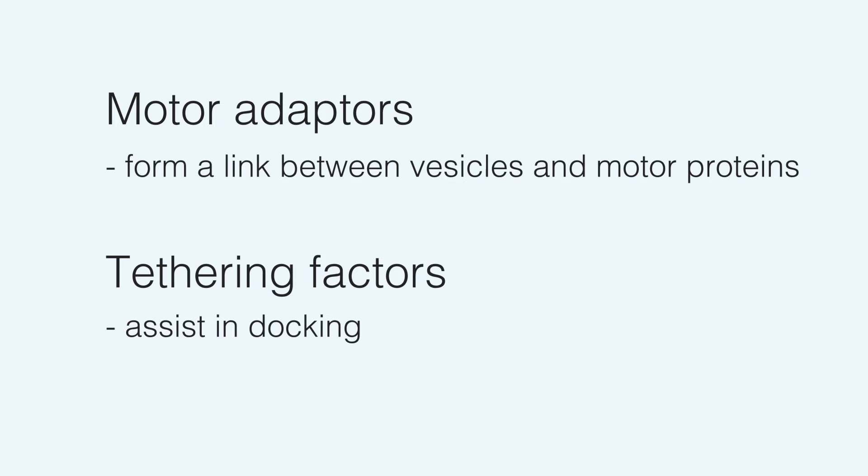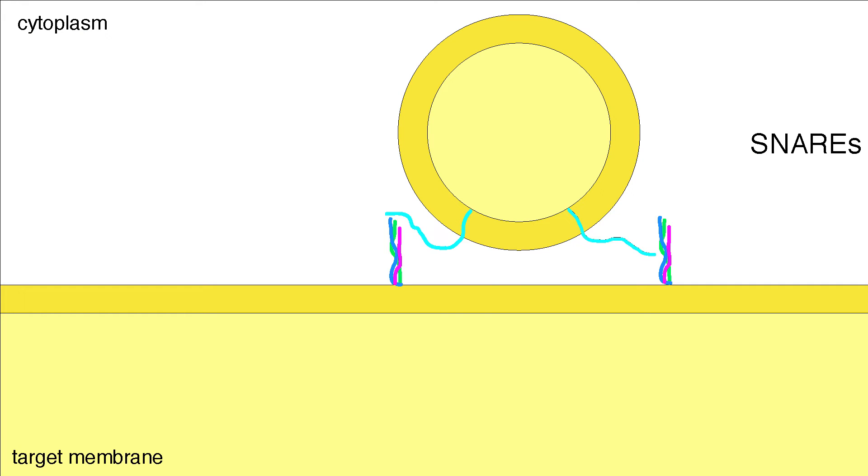But bringing the vesicle to the correct target membrane is only half the battle. The real challenge is overcoming the energetically unfavorable process of fusing the vesicle and target membranes. Membranes will only fuse together when they are brought within a few nanometers of each other. This process is accomplished by proteins called snares. Different forms of these proteins are bound to particular membranes and provide additional target specificity.